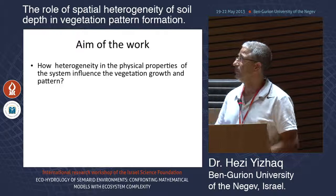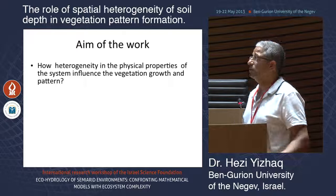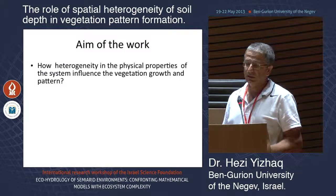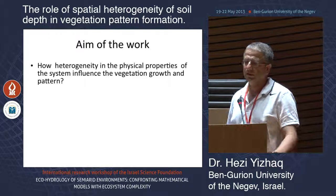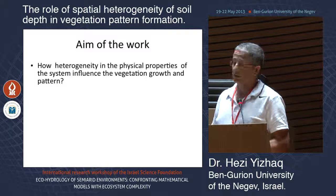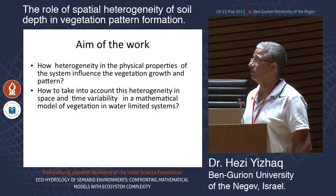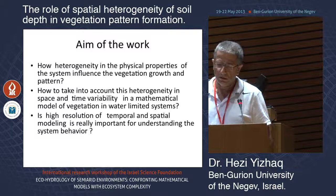What is the aim of the work? Most models of pattern formation have all parameters uniform and fixed. But we know that the ecological system is quite heterogeneous in all physical parameters, like soil depth, stones, and rocks — it is much more complicated. So how does heterogeneity influence vegetation growth and pattern? How do we take into account this spatial and temporal variability in a mathematical model for vegetation in a water-limited system?